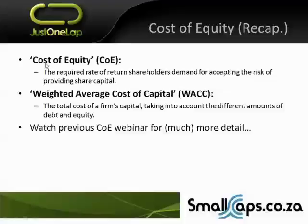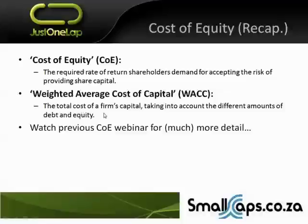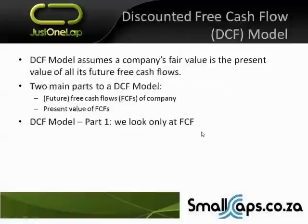Just to remind you, in summary: cost of equity is the required rate of return a shareholder demands for accepting the risk of providing share capital. Basically, it's the cost to the company of issuing shares — what does the shareholder demand to take that share? That's a risk versus reward question. The higher the risk, the higher the cost of equity. Then you get the weighted average cost of capital, WACC — the total cost of a firm's capital taking into account the different amounts of debt and equity. The cost of debt is the after-tax cost of financing — the interest rate, post-tax.